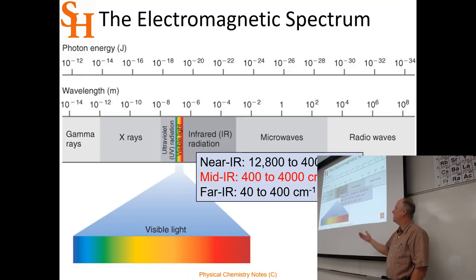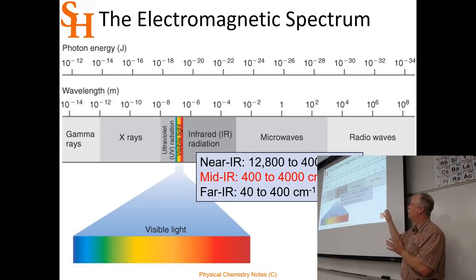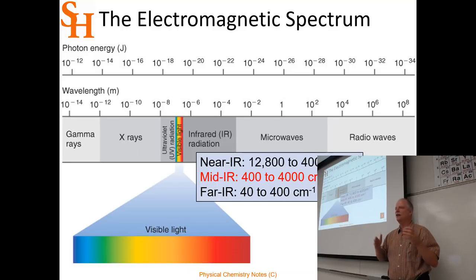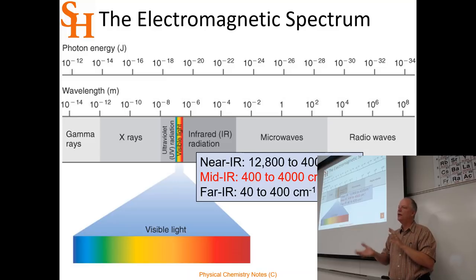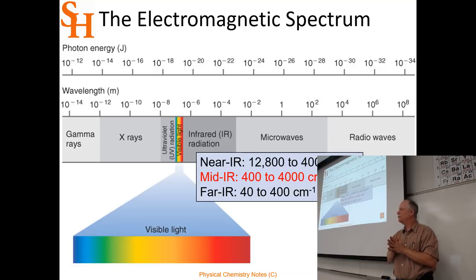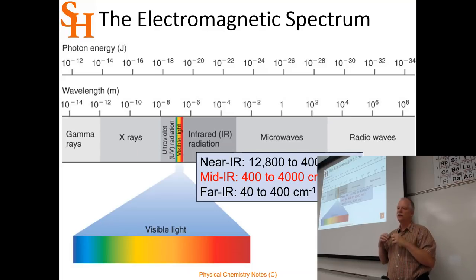The mid-infrared is what people typically mean by infrared spectroscopy, covering roughly 400 to 4,000 wavenumbers — though these limits aren't hard and fast. That range contains the fingerprint region of most molecules: bending modes, and stretching modes of light atoms like hydrogen. Carbon-hydrogen, nitrogen-hydrogen, and oxygen-hydrogen stretches appear around 3,000 wavenumbers. So if you want to know what kind of polymer or substance you have, you look at the bonding in that molecule and identify it.